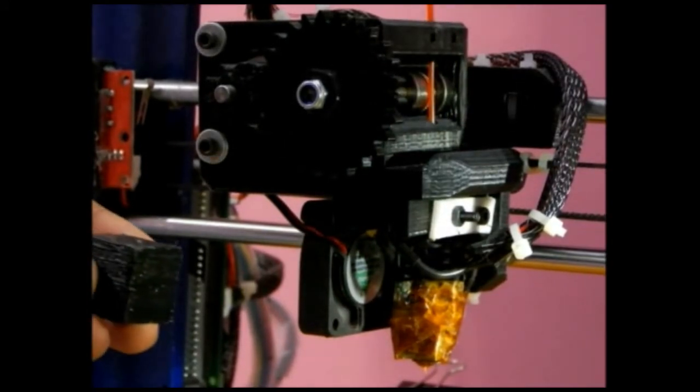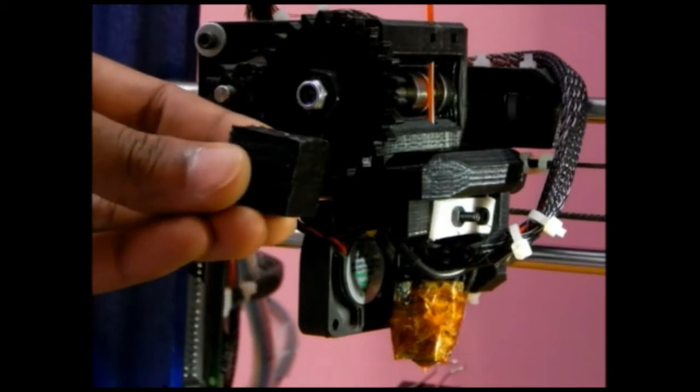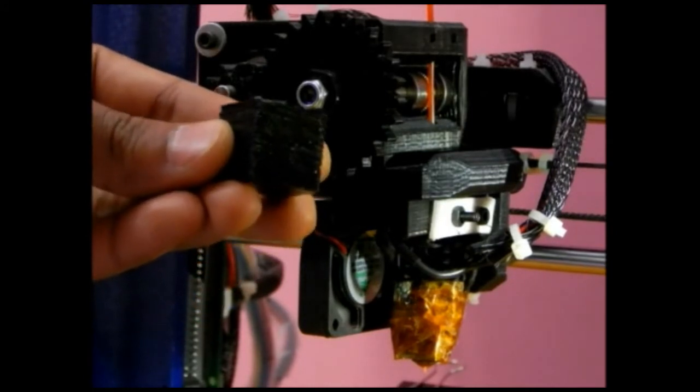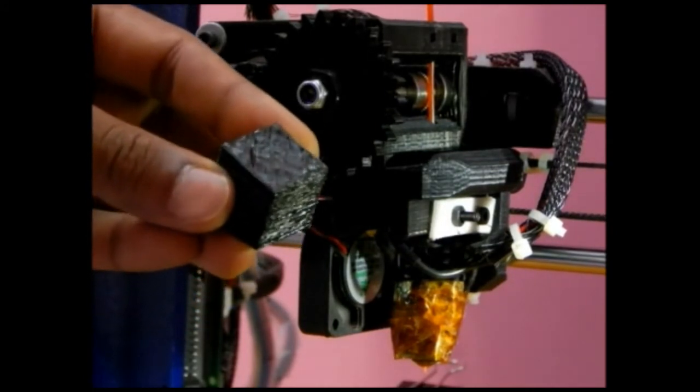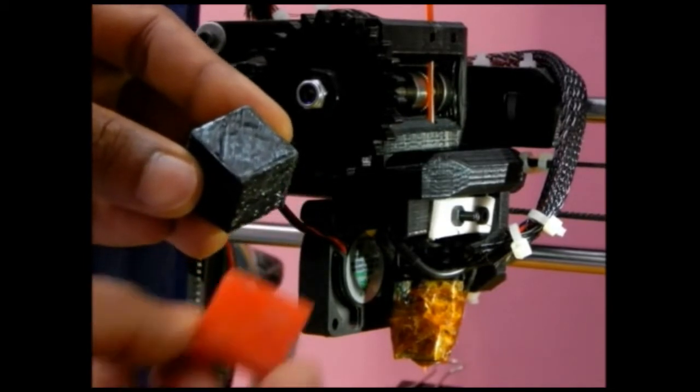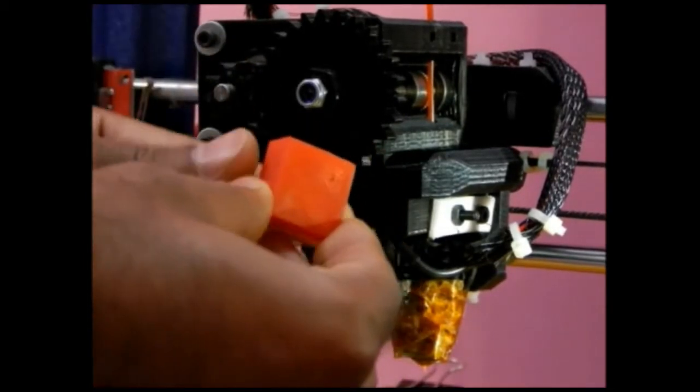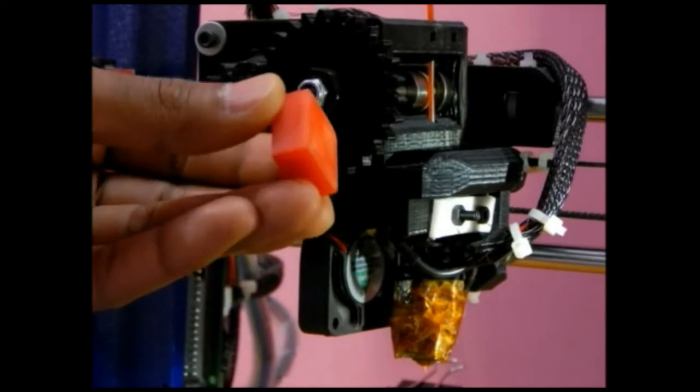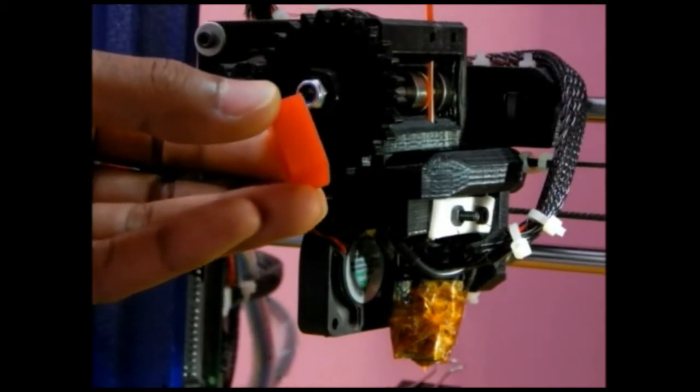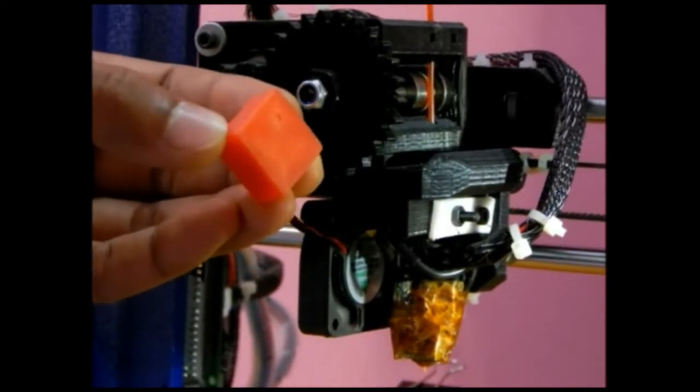As you can see, in this cube more material is extruded with very high E-steps value. And in this red cube, exact amount of material required is extruded with calibrated E-steps value.